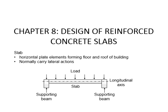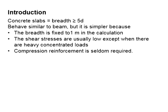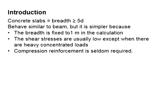A reinforced concrete slab is a horizontal plate element which forms the floor and roof of a building. It is normally used to carry the lateral action which acts perpendicularly to its longitudinal axis. It is normally supported by beams surrounding its edge. A typical slab has a breadth of more than 5 times each span. It behaves similarly to a beam but is simpler to design.